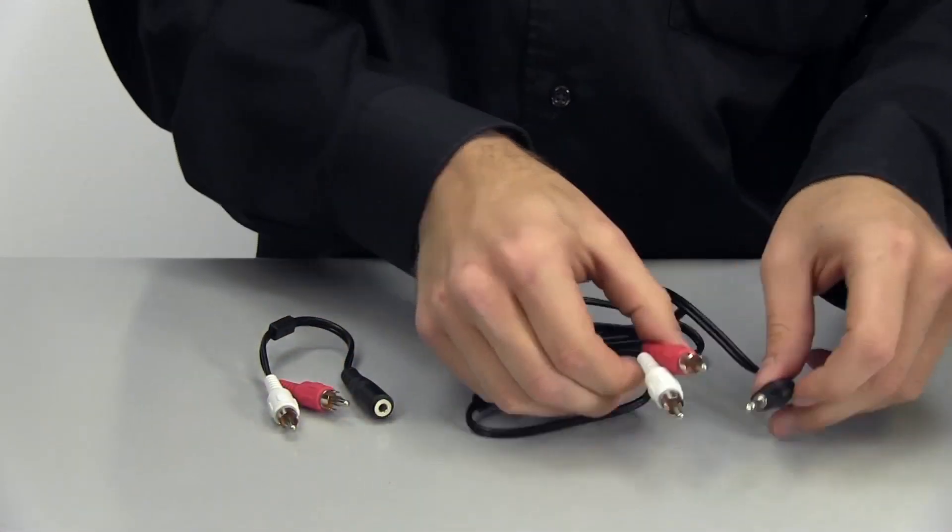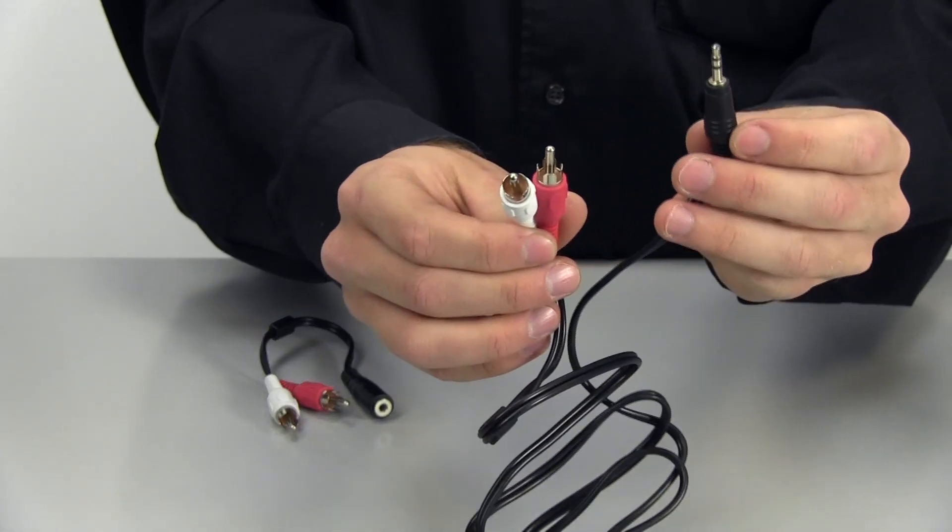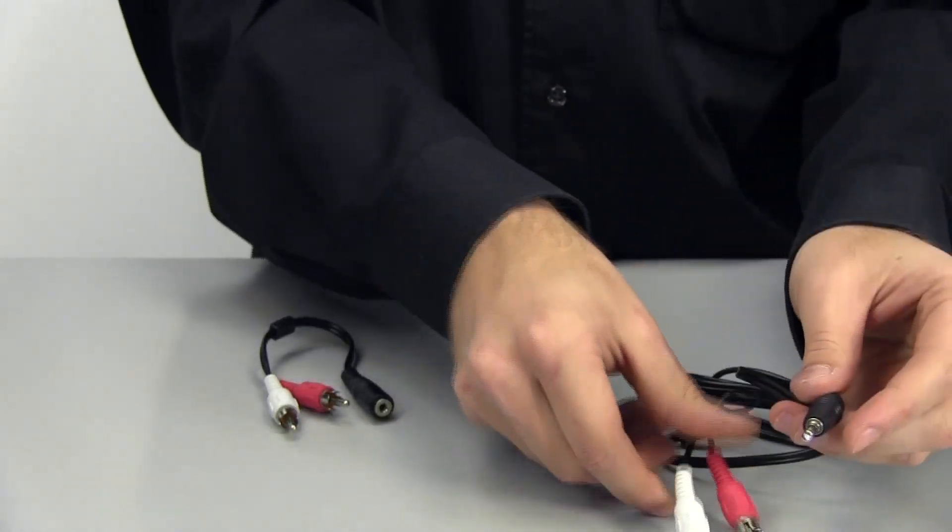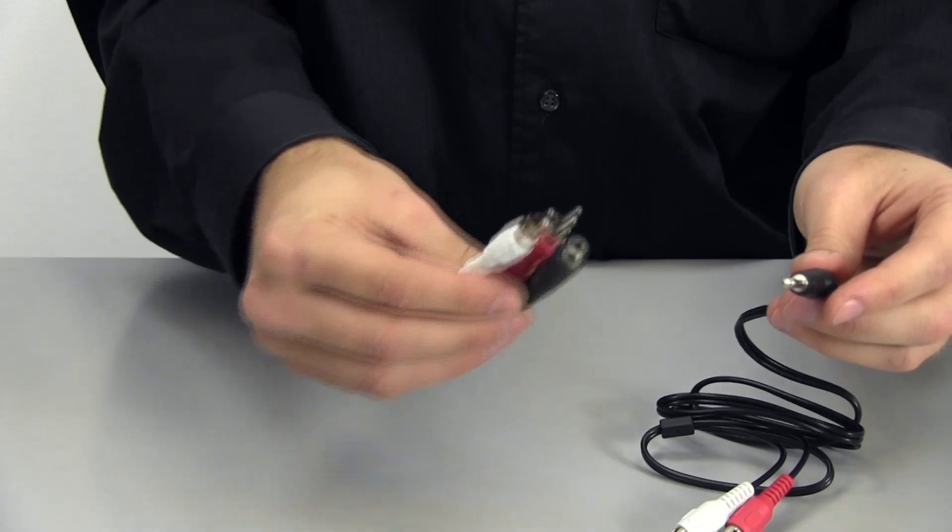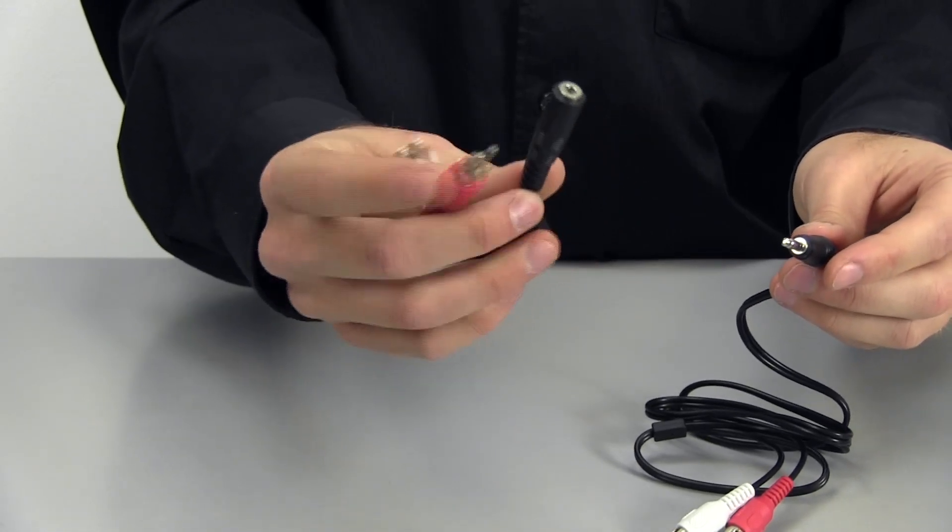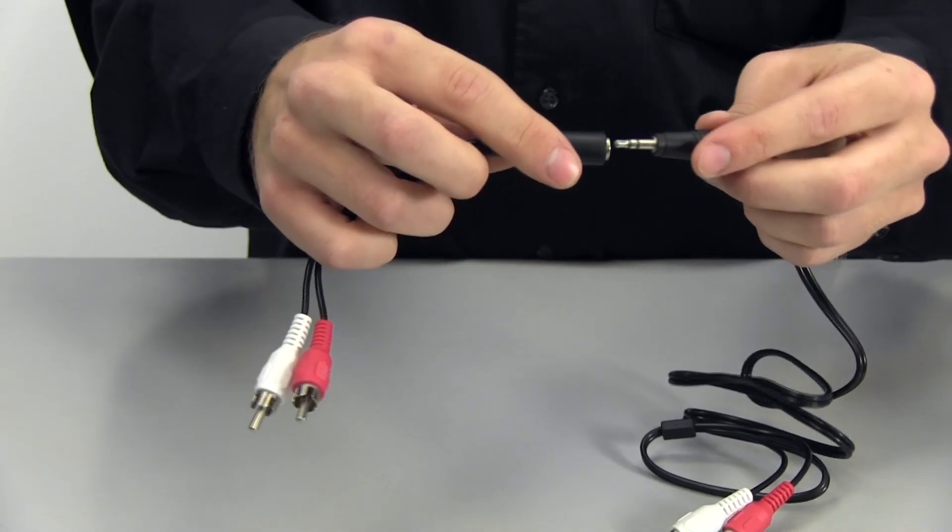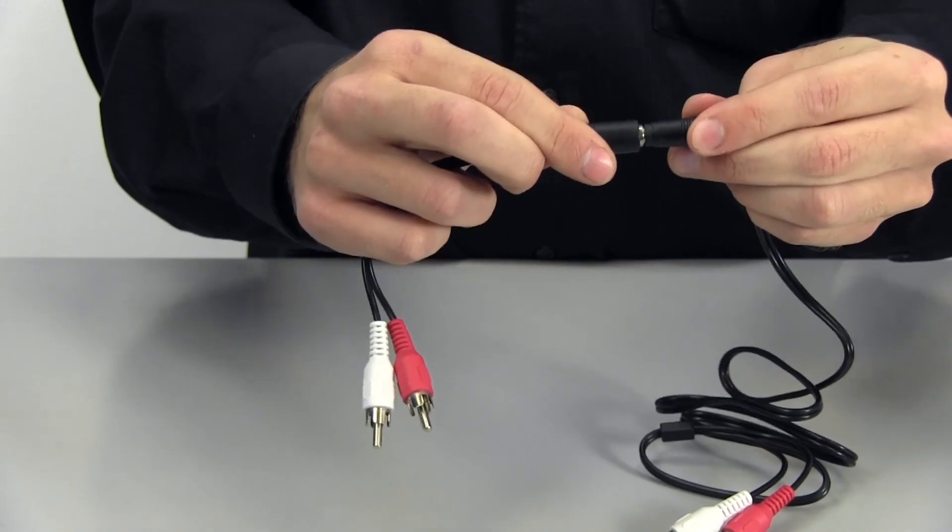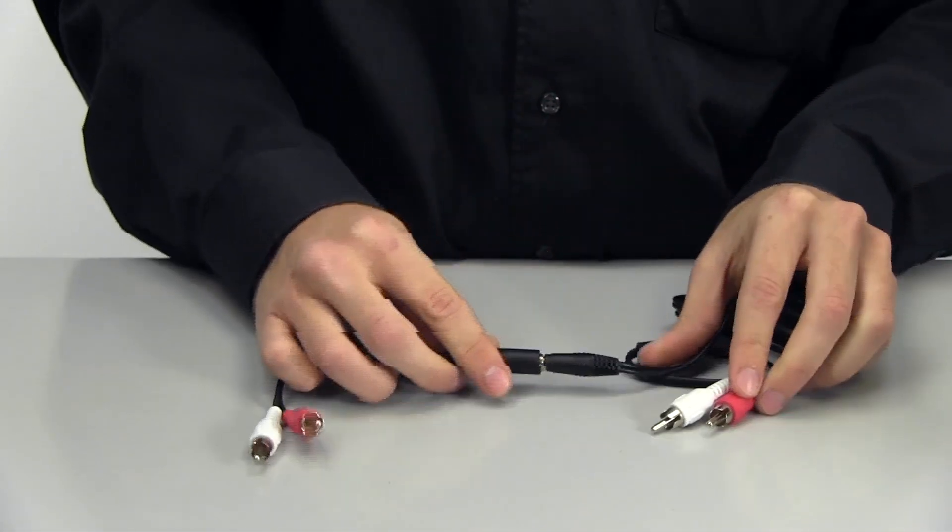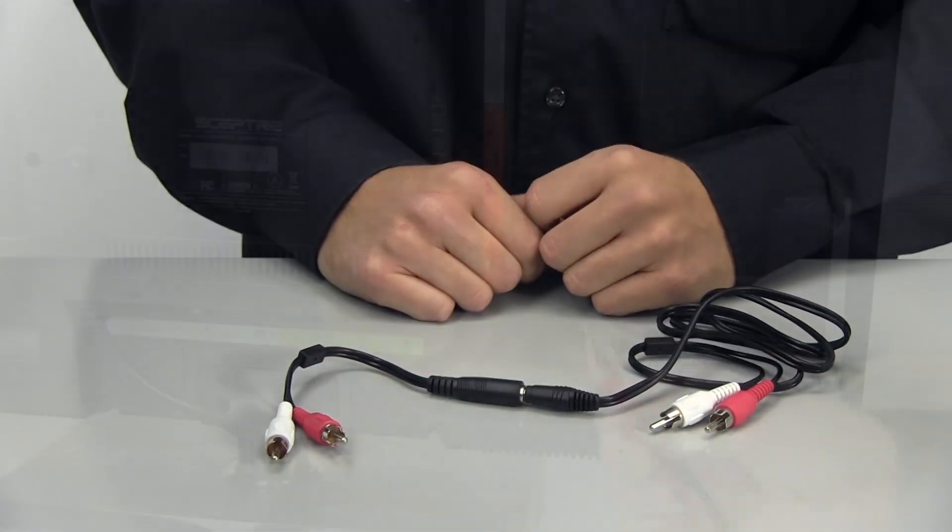We can now connect the transmitter to the audio device, in this case a TV. You'll want to connect the RCA male to 3.5 millimeter male Y cable to the 3.5 millimeter female to RCA male Y cable by connecting the 3.5 millimeter male end into the 3.5 millimeter female end.